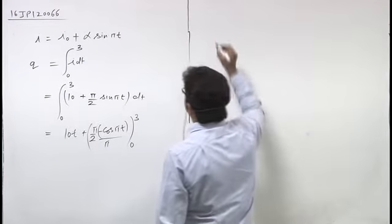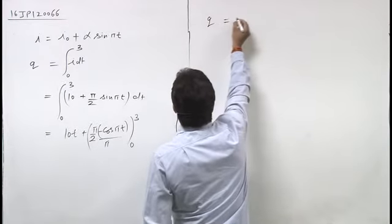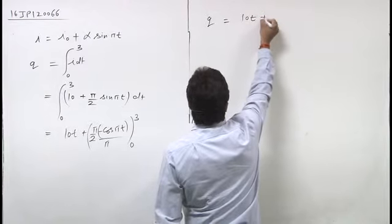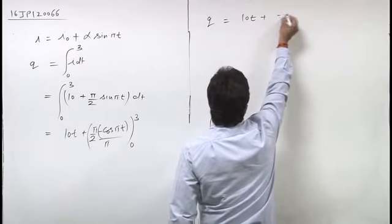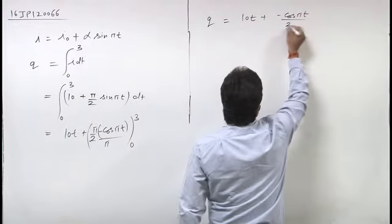Integrating this, q equals 10t plus, π cancels with the 2, giving negative cos πt divided by 2.